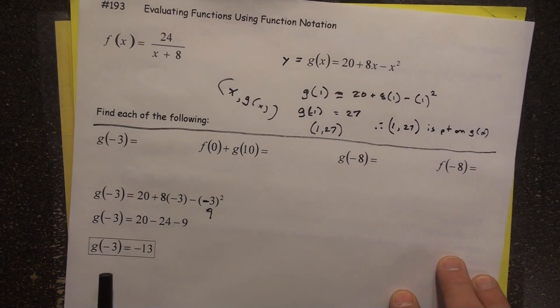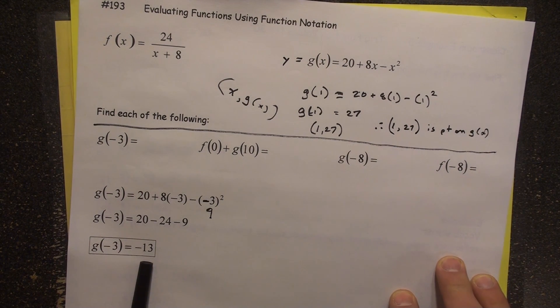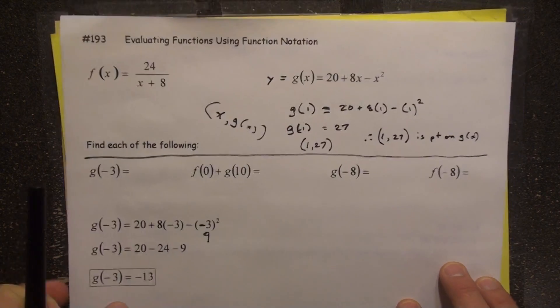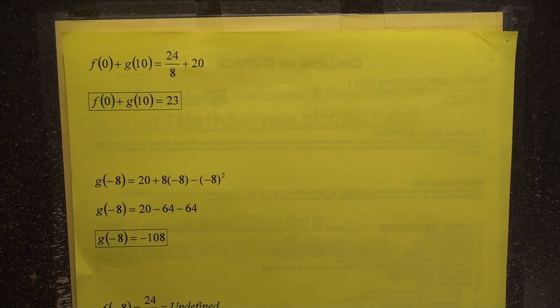So then what can we say? That negative 3 comma negative 13 is a solution to g of x. Pretty cool. Next one. Oh, here we go. We've got the yellow paper now. So then the next one, we've got f of 0 plus g of 10.